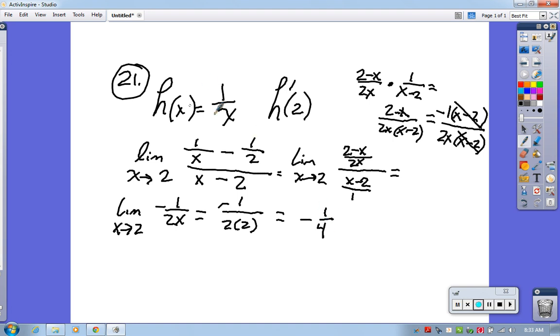So that function, 1/x, when x equals 2, has an instantaneous slope of -1/4. That's how steep it is at that point.